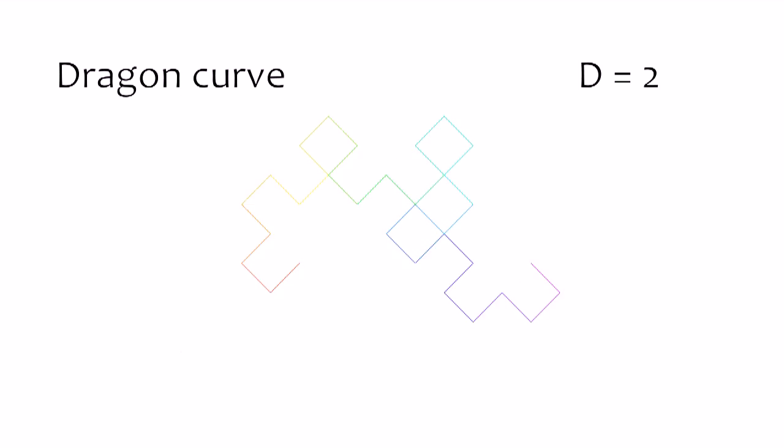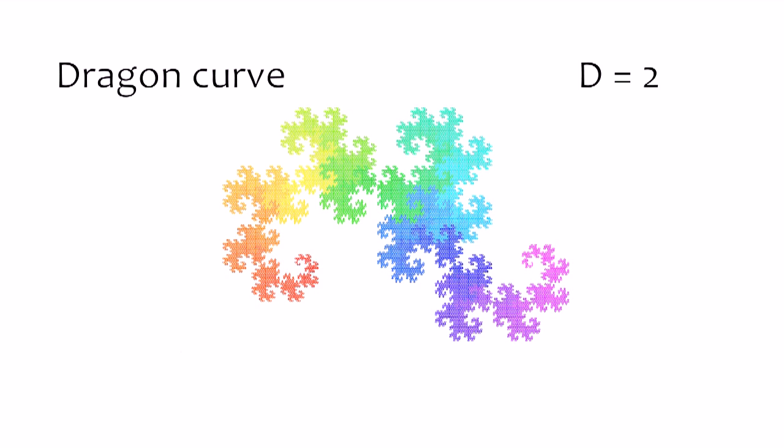Which brings me to Peano curves. Giuseppe Peano discovered the first curve that could fully fill up some area on a plane. Think about it — how can anything that has zero width completely cover the area of a square, for example? Peano's findings were quite groundbreaking at the time. As you may have guessed, this curve has a fractal dimension of 2. Another example of a space-filling curve is the Dragon curve.